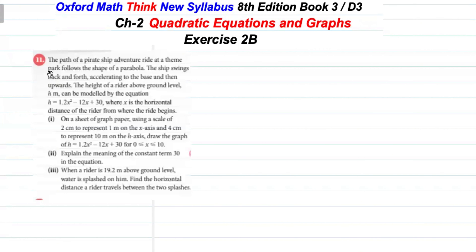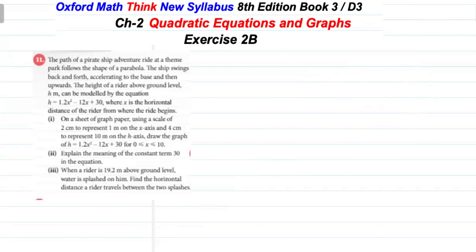یہاں پر ایک equation دی ہوئی ہے۔ ایک رائیڈر ہے اور اس کے path کی equation ہے۔ جب وہ move کر رہا ہے تو اس کا path parabolic ہوتا ہے۔ آپ کو معلوم ہے کہ جو parabolic path ہے وہ quadratic equation کی فارم میں ہوتا ہے۔ تو یہ equation basically ایک parabolic path میں اس کے movement کی equation ہے۔ اب اس equation کی help سے آپ نے graph draw کرنا ہے اور x کی values 0 سے 10 کے between دی ہوئی ہیں۔ ان x کی values کے against ہم پہلے h کی values find کریں گے اور پھر graph draw کریں گے۔